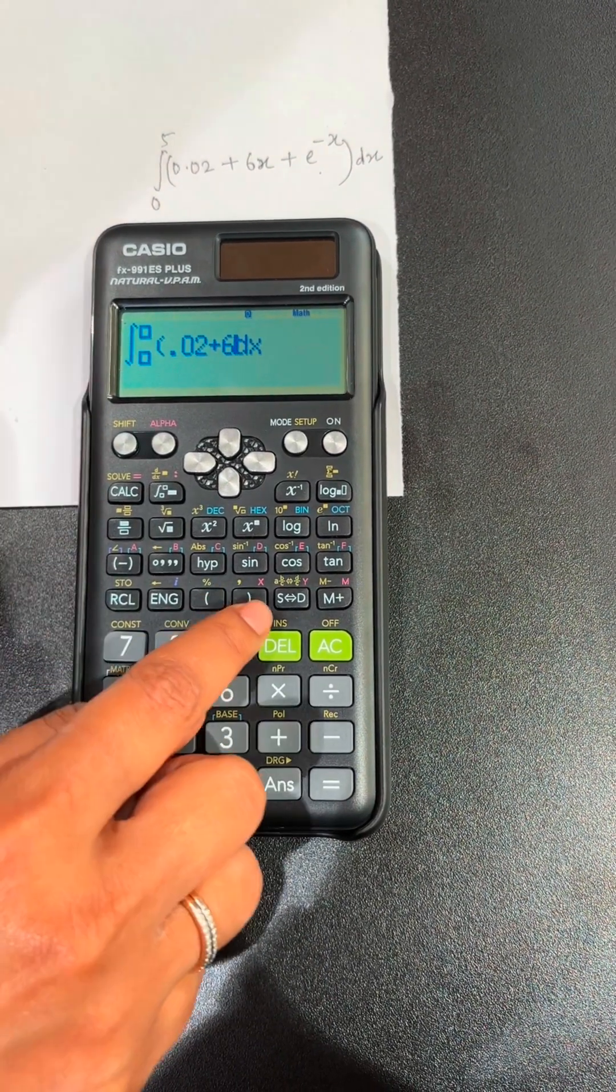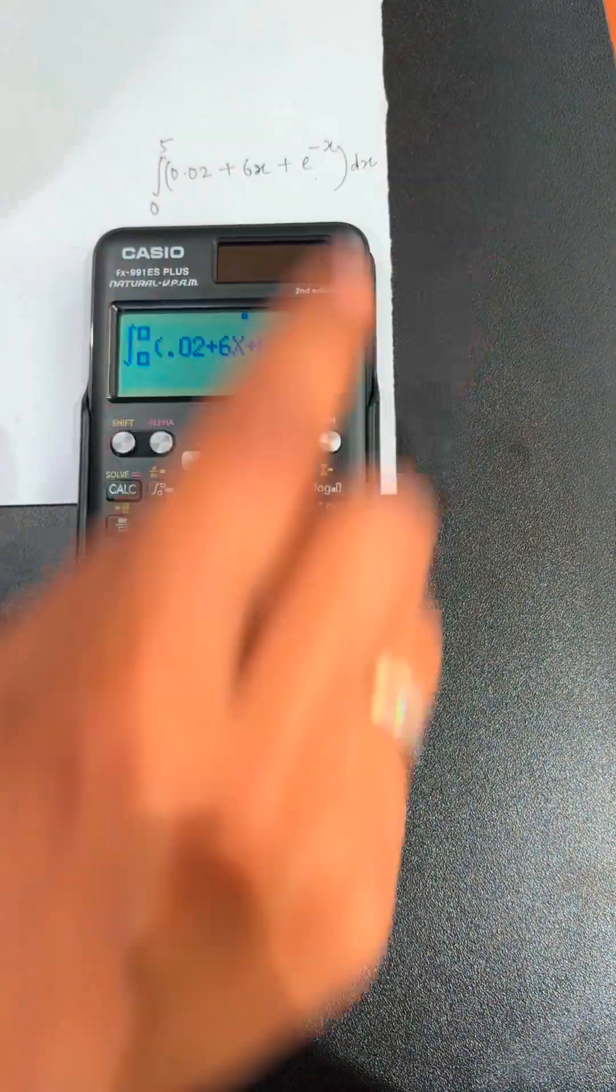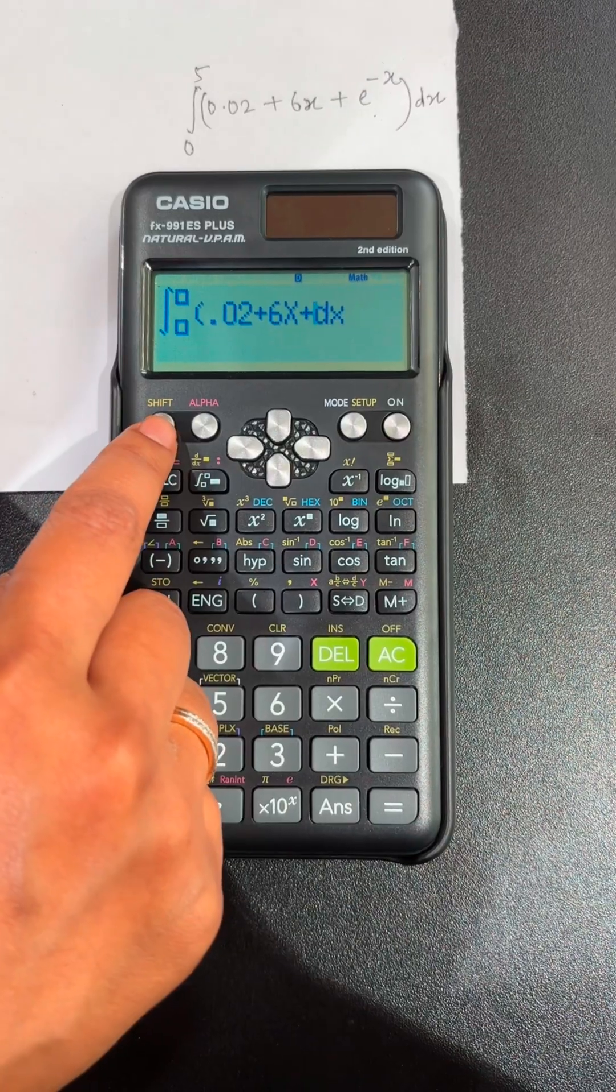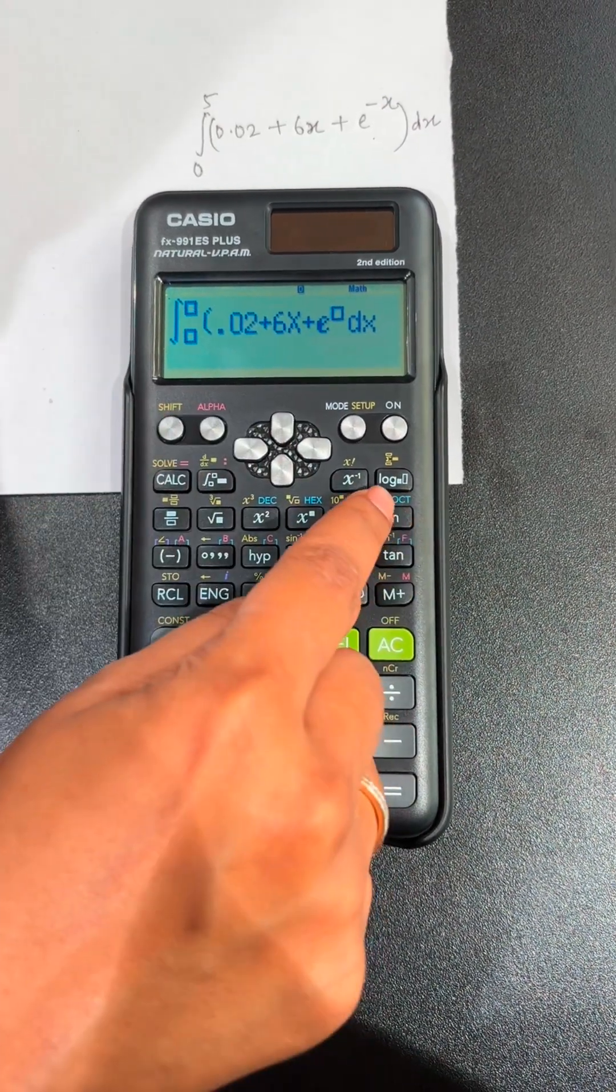you have to press this button alpha x plus. Then we have e to the power minus x. Just click on shift e. Shift log gives you e.